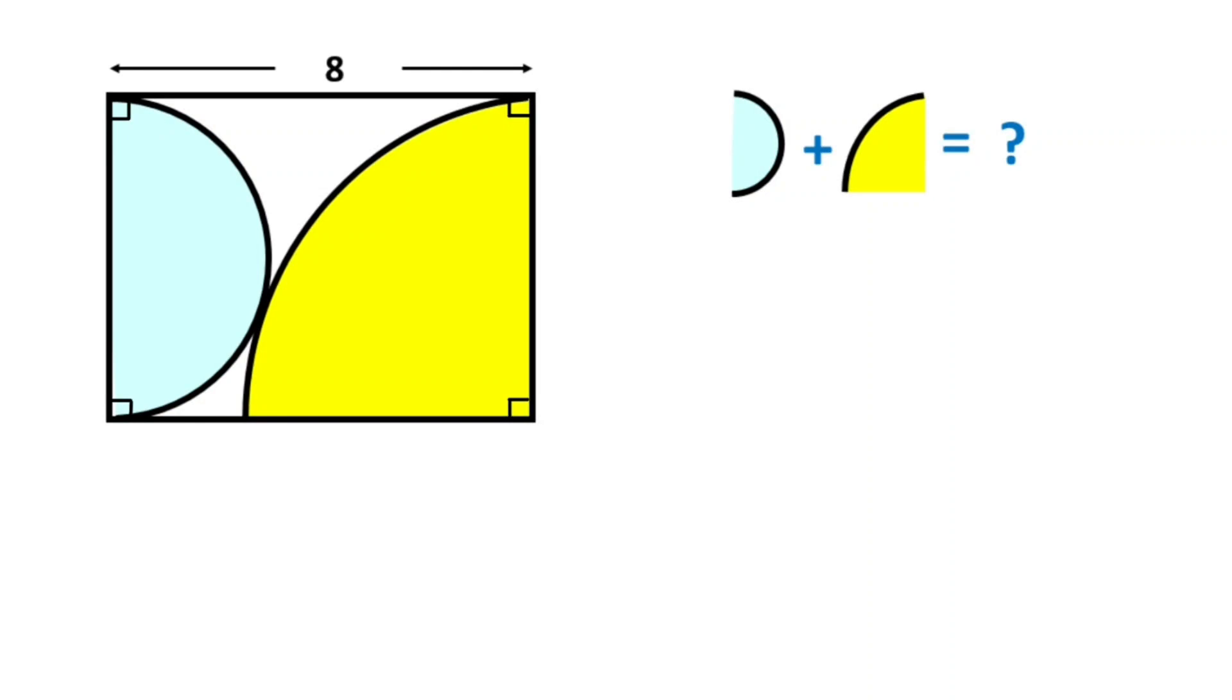Hello everyone, in this video we have one rectangle, one semicircle, and one quarter circle. This side is given as eight units, and here is the tangent point and center of the quarter circle. We need to find the sum of the shaded areas.